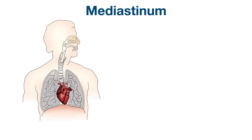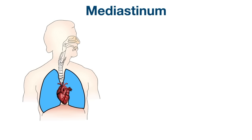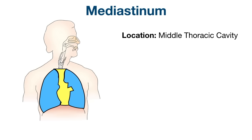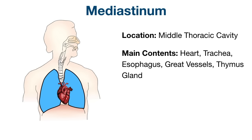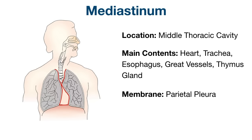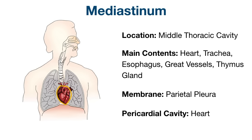The right and left pleural cavities and lungs make up part of the thoracic cavity. The middle area of the thoracic cavity is called the mediastinum, making up the middle portion of the thoracic cavity. You can remember the M in middle and mediastinum to help you remember this. The main contents of the mediastinum include the heart, trachea, esophagus, great vessels, and thymus gland. The outer parietal pleura lines the mediastinum. There is one more cavity within the mediastinum — the pericardial cavity.